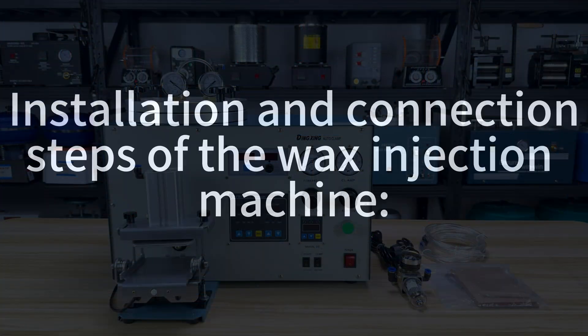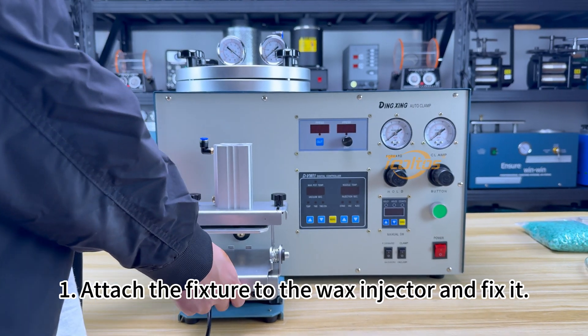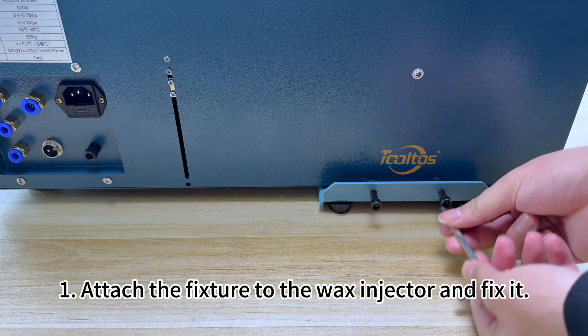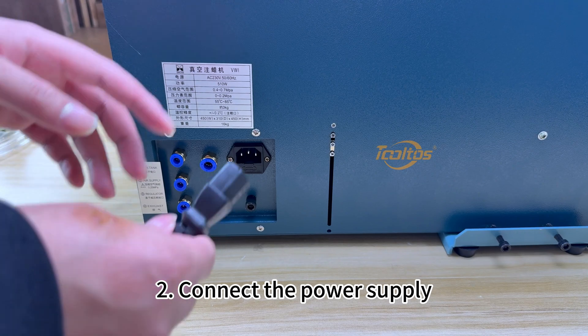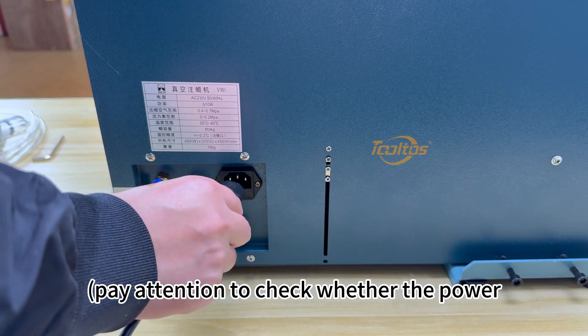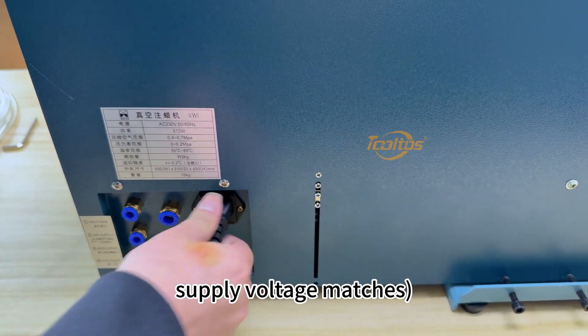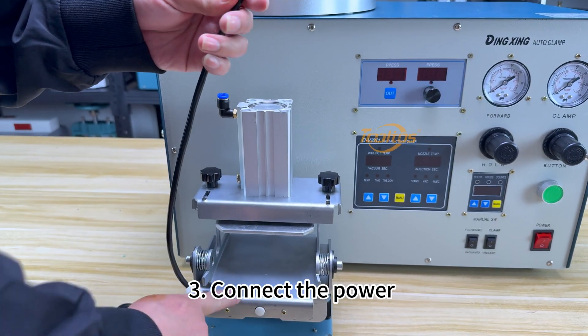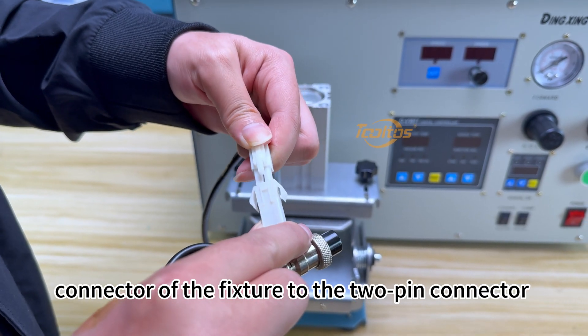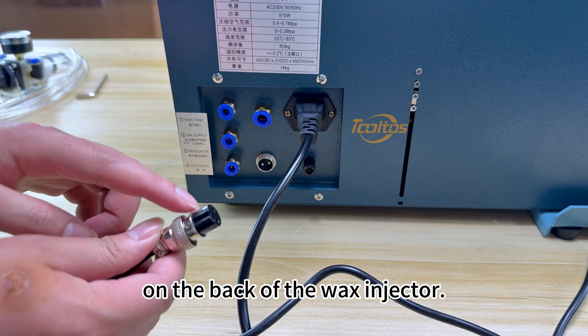Installation and connection steps of the wax injection machine: 1. Attach the fixture to the wax injector and fix it. 2. Connect the power supply, paying attention to check whether the power supply voltage matches. 3. Connect the power connector of the fixture to the two-pin connector on the back of the wax injector.